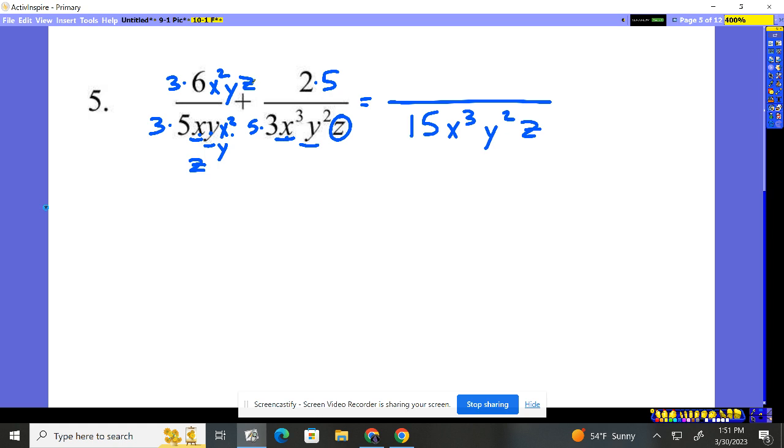Now we can clean everything up. The bottom we've already done. Three times six is 18, x squared y z, plus. Then over here all we have to do is two times five is 10. And there's our answer. We have actually gotten a common denominator and made everything equal and added them together.